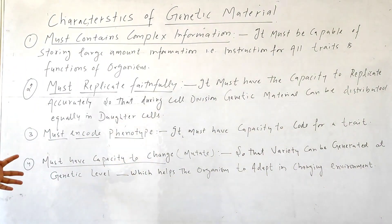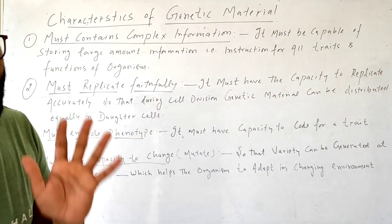So these are four characteristics of genetic material. First is must contain complex information, must replicate faithfully, must encode for phenotype, and have the capacity to change.